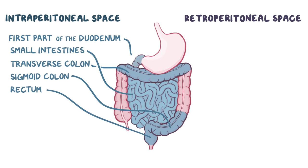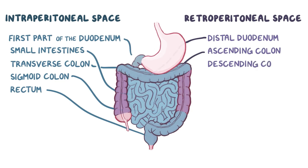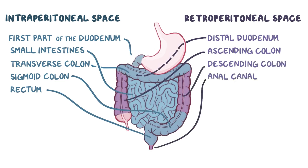The retroperitoneal space contains the distal duodenum, ascending colon, descending colon, and anal canal. So the large intestines essentially weave back and forth between the intraperitoneal and retroperitoneal spaces.